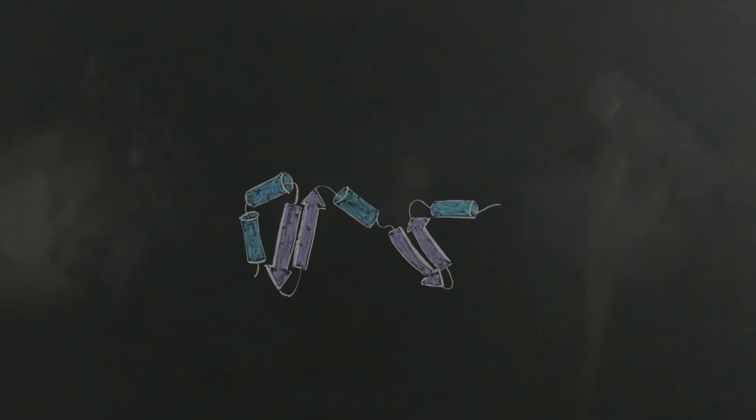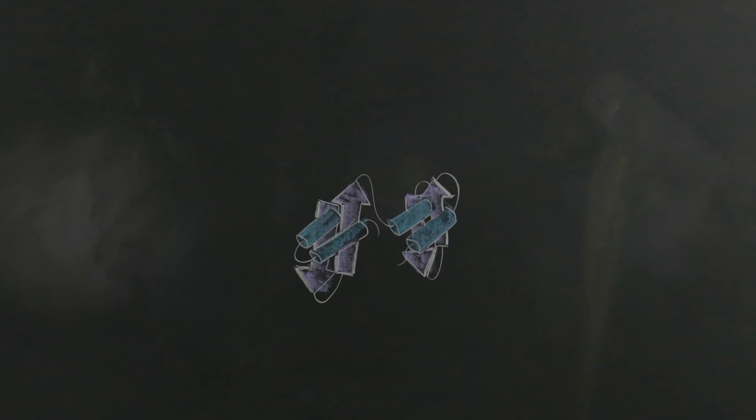A protein will continue to fold on itself, ultimately leading to the third level of structure known as the tertiary structure. If a protein is made of just one polypeptide, then the tertiary confirmation is the highest level of folded structure for this protein.